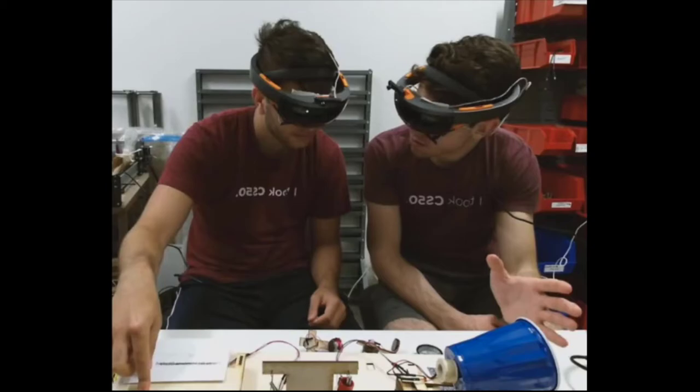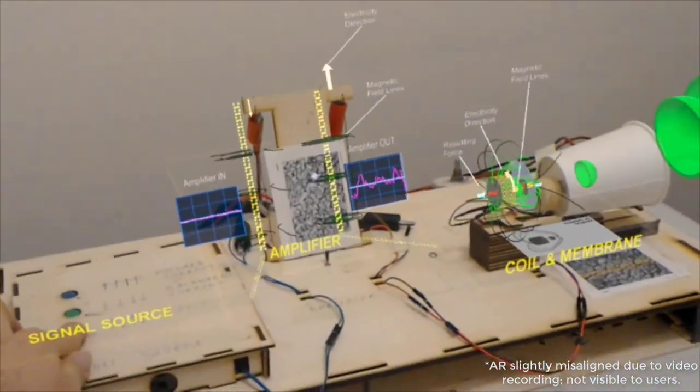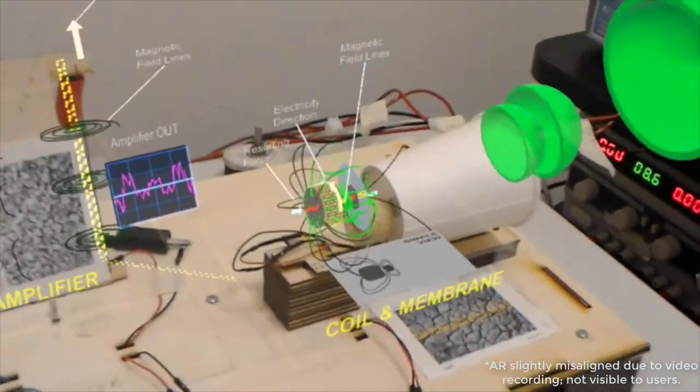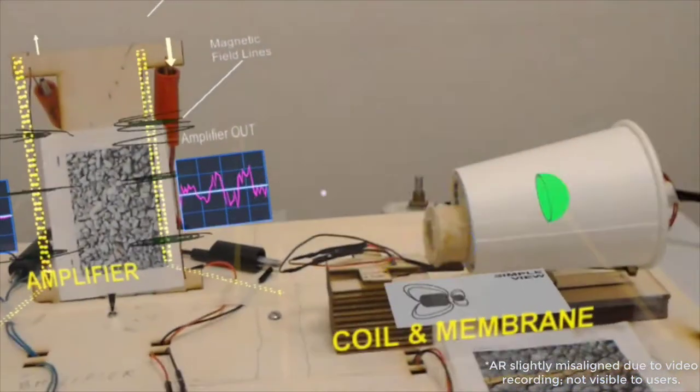So we use HoloLens headsets to have people visualize physics concepts, such as audio waves shown in green here, electricity shown in purple, magnetic fields shown in blue and green, and also system components that are attached to these labels.